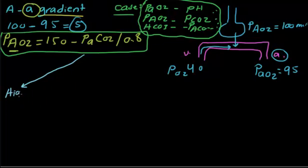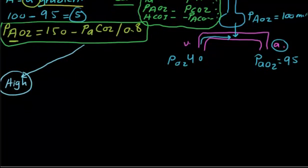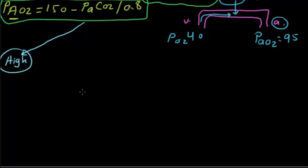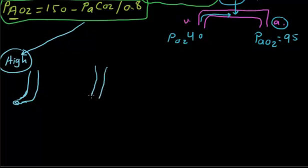Now let's divide A-a gradient into two big categories: high A-a gradient and normal A-a gradient. For high A-a gradient, let's start with the anatomy. This is the alveoli — look at the alveoli and the bronchial wall. As a result of a bronchial wall problem, the alveoli can become very small and collapsed.